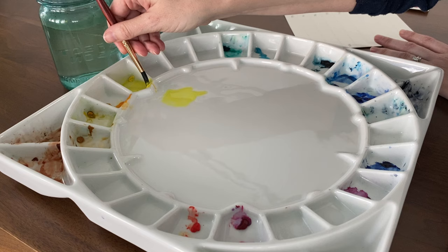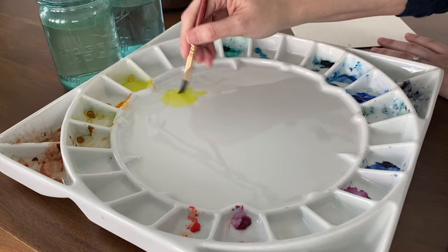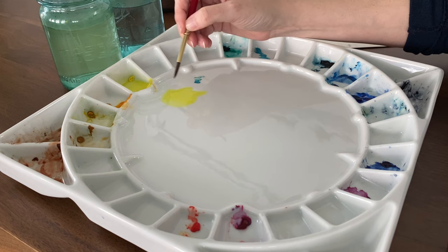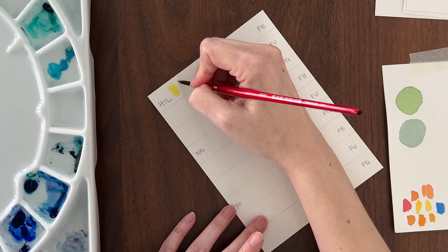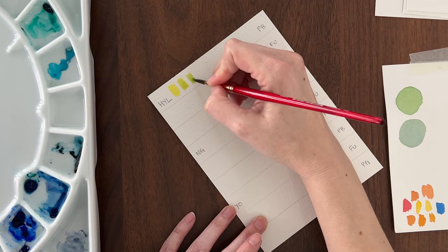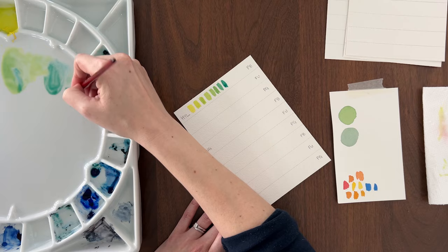Then it's time to mix. I'll start with pure yellow and paint a swatch of that first. Then I'm going to slowly add the blue one touch at a time and swatch each mix until I get about a 50-50 mix in the middle. I'll keep adding more blue until I get to the end of the row and my color is almost pure blue.